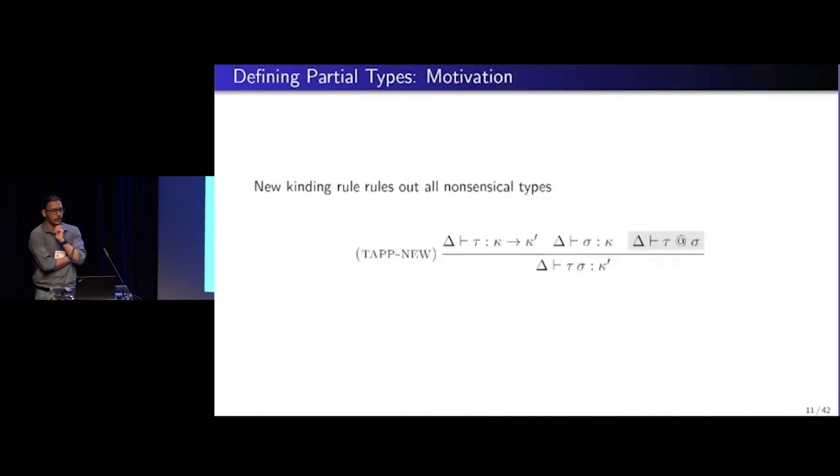So the rule that should have existed looks something like this, where we have this extra well-formedness condition in the kinding rule that says when a type is well defined. And we need to have enough information in our context to prove that it indeed is well defined.